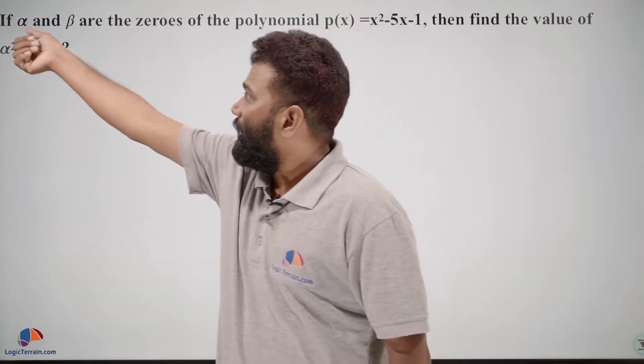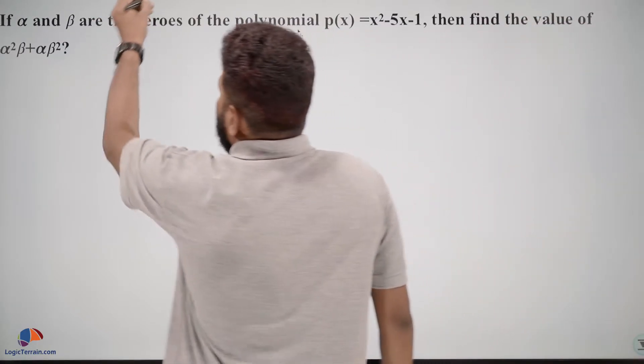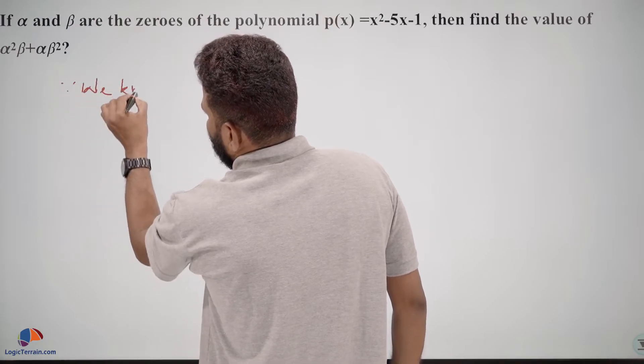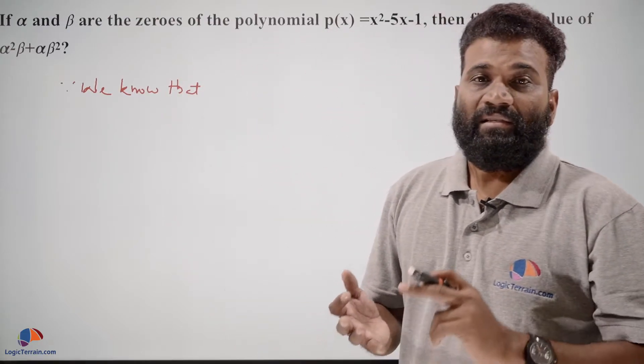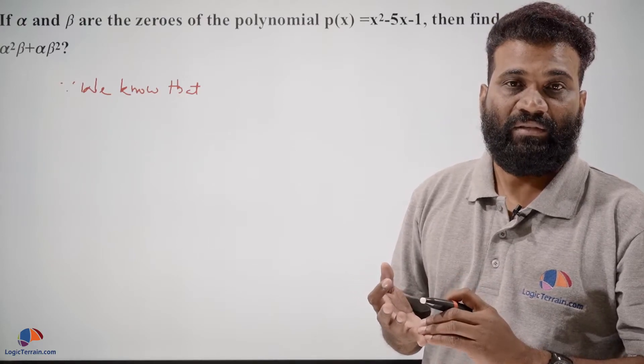So we have given alpha and beta as zeros of this polynomial. Then we know that the relation between sum of zeros and their coefficients, as well as product of zeros and their coefficients.